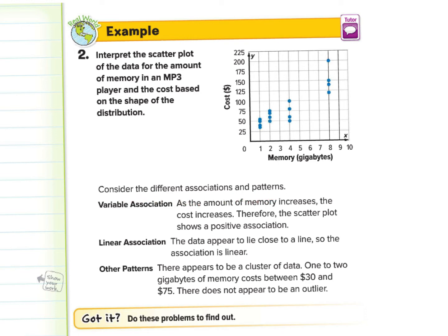So when we have the gigabytes per different types of MP3 players or music devices, we can see that there is a bit of a pattern. The more gigs, the more costly it is. But how is it interpreted? Consider the different associations and patterns. Variable association. As the amount of memory increases, the cost increases. We already established that. Therefore, the scatter plot shows a positive association. There's definitely a positive association. I don't really see a linear association quite yet. But I guess you could draw a line to those four dots right there. Because it seems pretty straight.